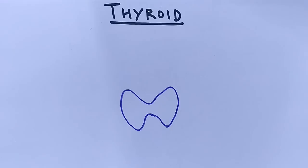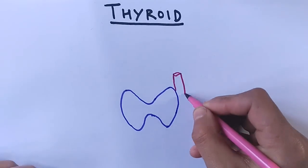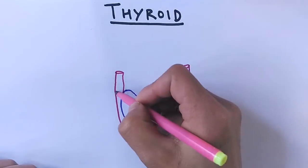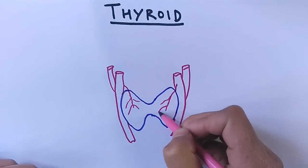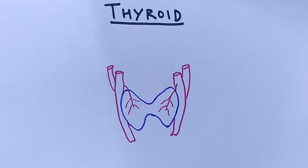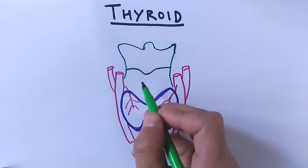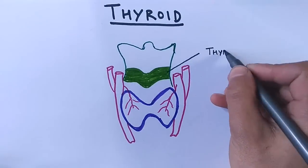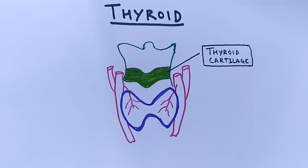In the diagram we can see it's a butterfly-shaped gland with two lobes, and these two lobes are connected by a narrow isthmus. These lobes have three primary components: follicles, follicular cells, and parafollicular cells, each with different functions. Common carotid arteries are attached to them, supplying oxygenated blood to these lobes.